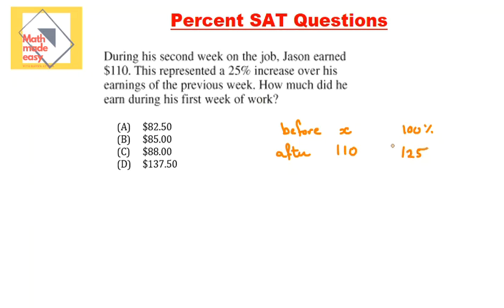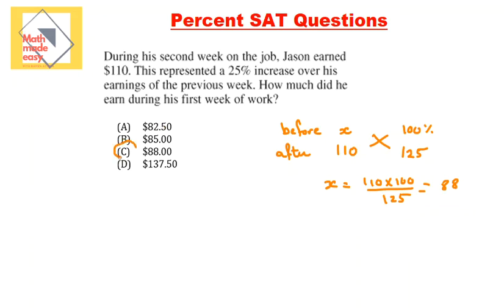We add to 100 because it's an increase. Cross multiplying gives X equal to 110 times 100 over 125. Solving this, he made $88 in his first week. So the answer for this question is C.